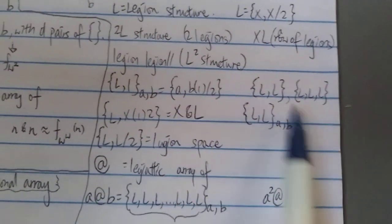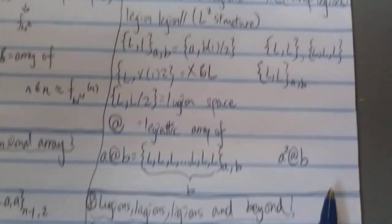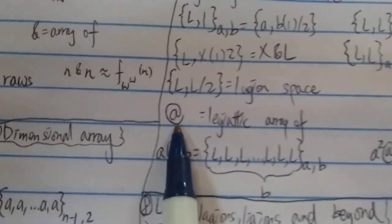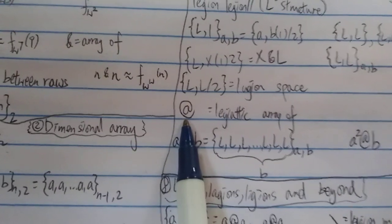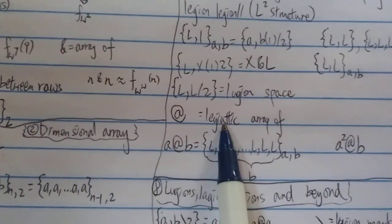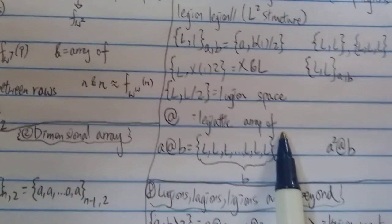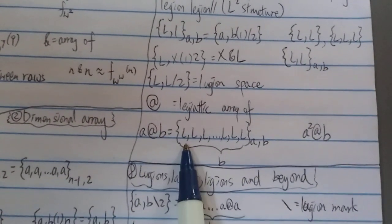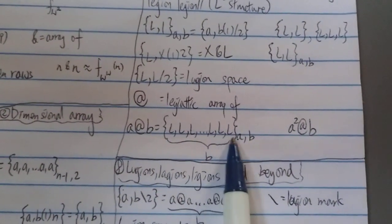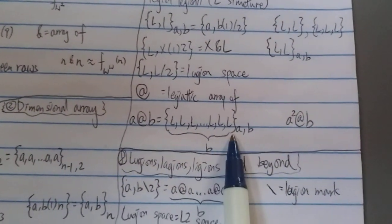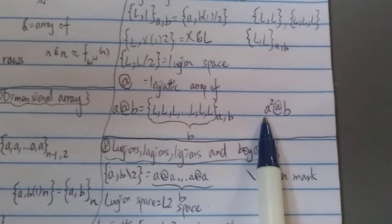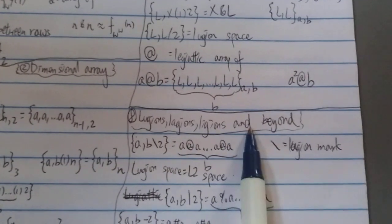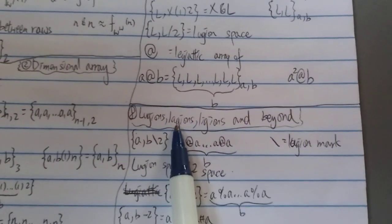This is the legend space. You can do {x ⊗ L} and then {L ⊗ L}, {a,b} something like that. Then we reach a new notation meaning 'legionic array-of': {a @ b} means L, L, L with b number of L's and then {a,b}. You can extend this further.